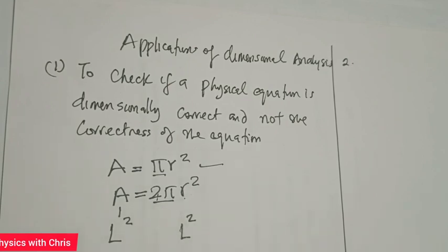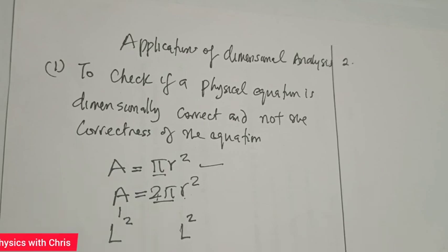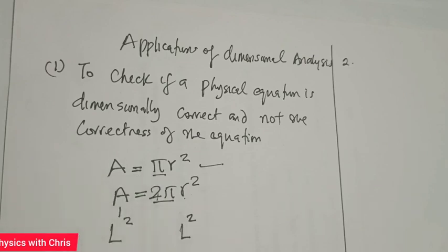The radius has dimension L, so the dimension of r² is L². That shows that whether you write area as πr² or as 2πr², both of them are dimensionally correct. But the correct equation is area equals πr². So when we use dimensional analysis to check for correctness, we are checking if the equation is dimensionally correct, not just the correctness of the equation.